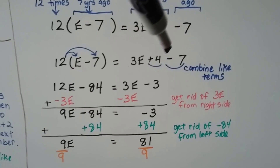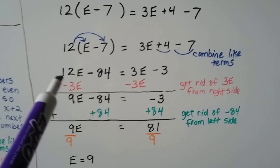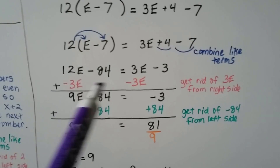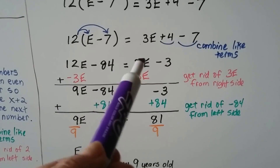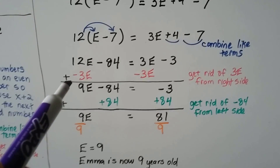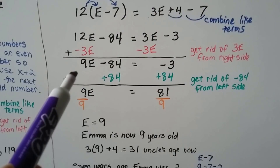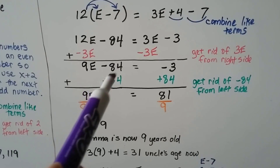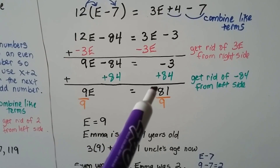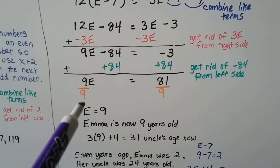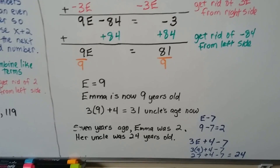We combine like terms to isolate e. We add negative 3e to both sides, creating a zero pair and leaving 12e minus 3e, which is 9e, so 9e minus 84 equals negative 3. We add 84 to each side: 9e equals 81. Dividing both sides by the coefficient 9, we get e equals 9. So Emma is now 9 years old.